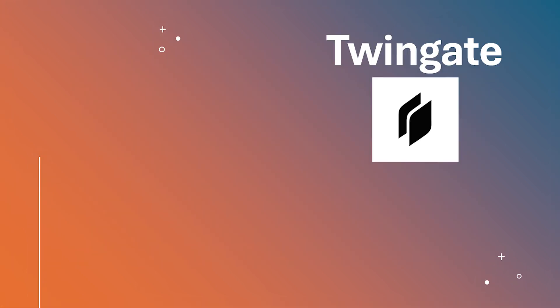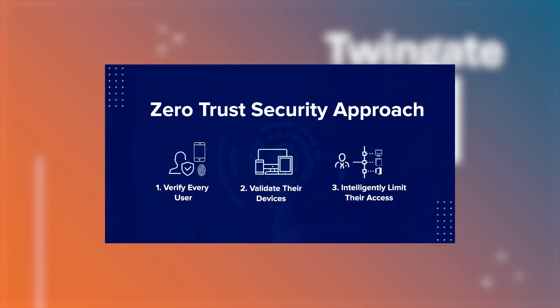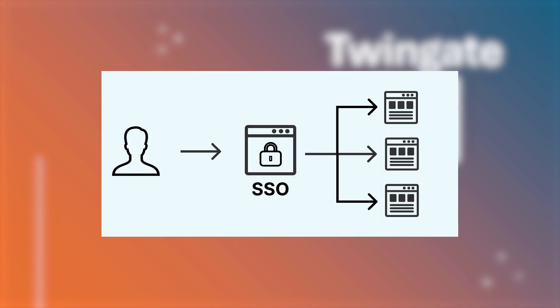Twingate takes a different approach by emphasizing zero-trust security. Instead of giving users full network access, Twingate functions as a VPN alternative that prioritizes security, particularly for remote teams and cloud environments. Twingate also integrates with single sign-on solutions, making access management seamless for IT administrators.